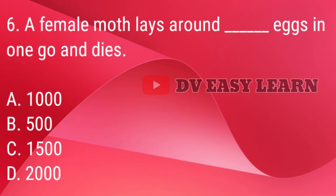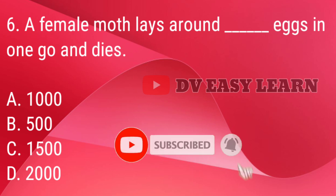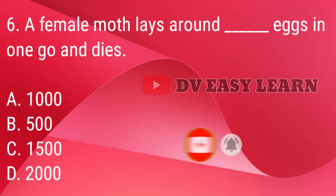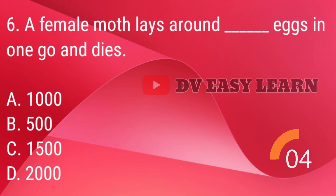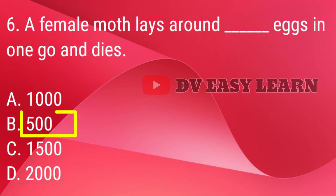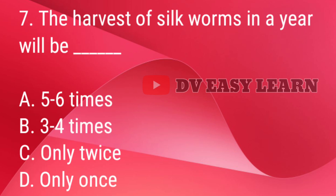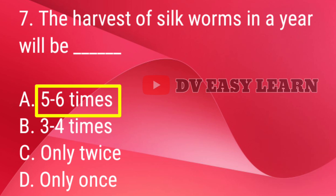Q6. A female moth lays around 300–500 eggs in one go and dies. Q7. Harvests of silkworms in a year will be — correct answer: 5–6 times.